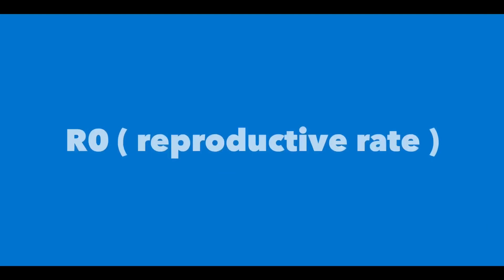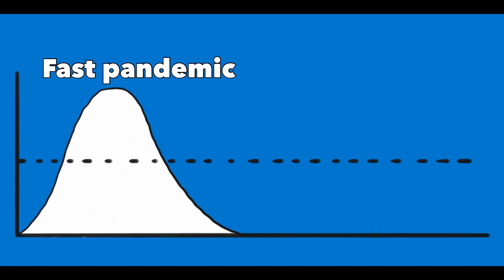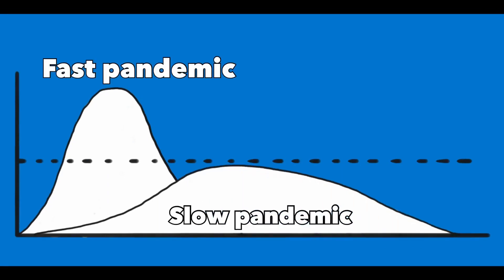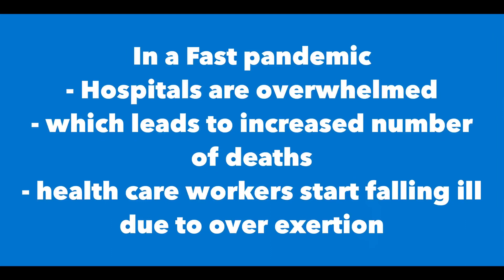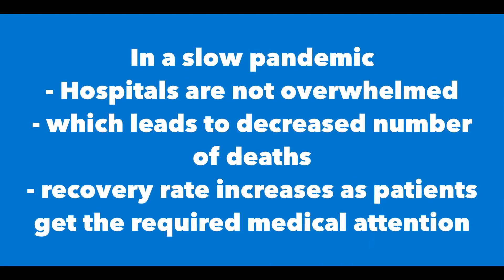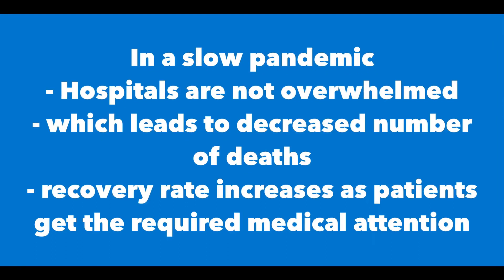The coronavirus is also more contagious than the flu. Its R0 (reproductive rate) is 3, meaning one infected person can infect three people, those three infect nine more, and so on, generating a large number of cases rapidly. This pandemic can go in two ways: a fast pandemic with an exponential rise in cases overwhelming hospitals and causing many deaths, or a slow pandemic where cases don't rise exponentially, hospitals are not overwhelmed, and people receive the necessary medical treatment.